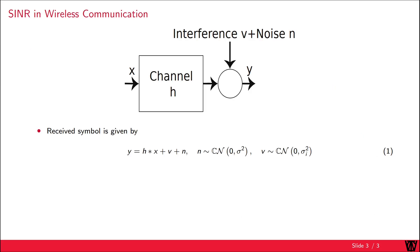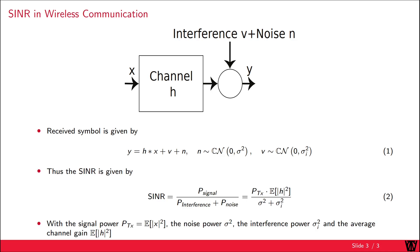In the figure you can see a simple model of an additive white Gaussian noise channel including the interference. The transmit symbol X is transmitted over the channel H. The received symbol Y is given by the channel convolved with the transmit symbol, plus the interference, plus the additive white Gaussian noise. For simplicity, the interference is also modeled as a complex Gaussian random variable. The signal to interference plus noise ratio is given by the transmit power multiplied by the average channel gain, divided by the sum of the interference and noise power.